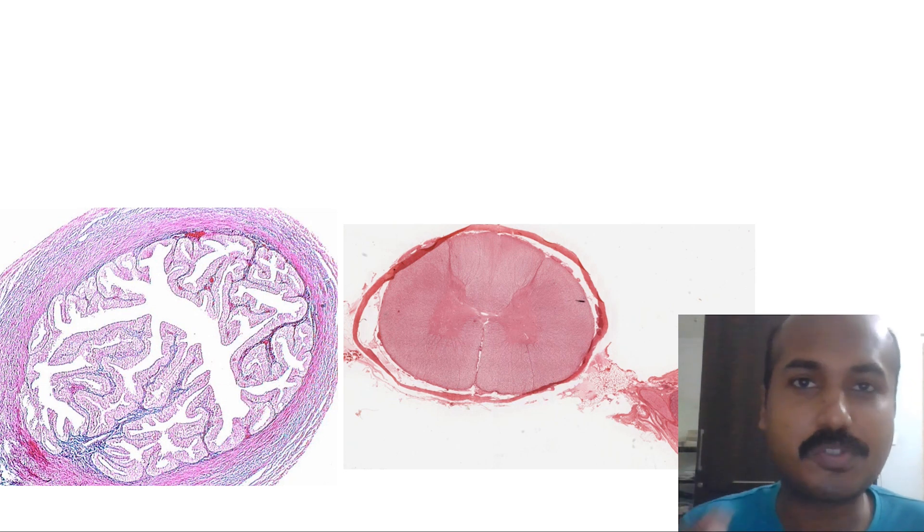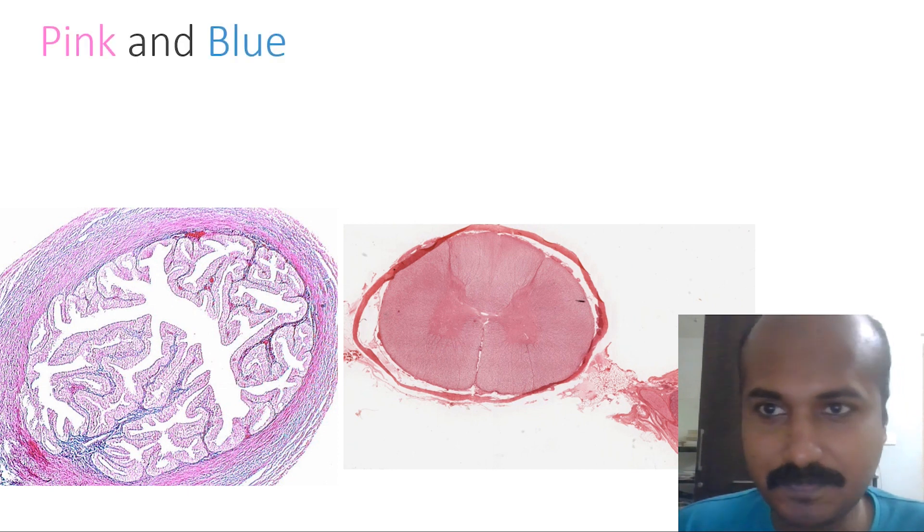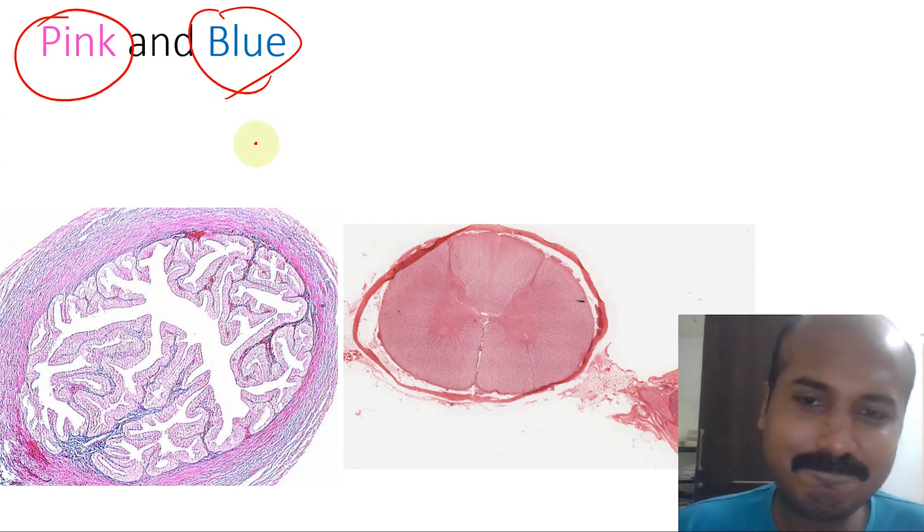Knowing basic tissues will give you a big lead on understanding histology. Now, as you know, in all these pictures it's basically a combination of two colors: one is pink and the next is blue.